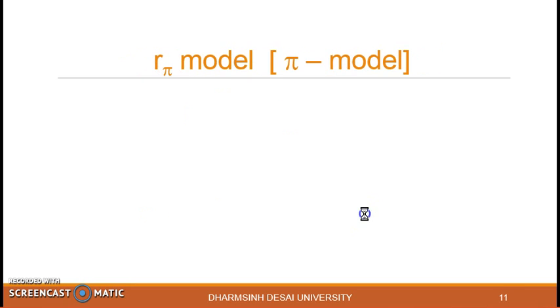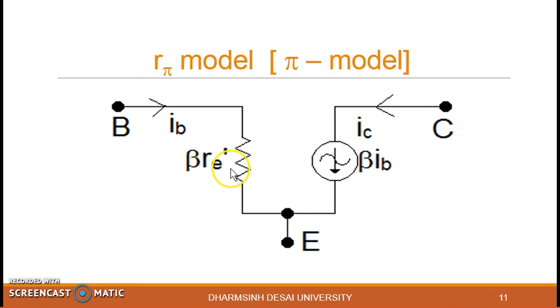So your pi model will look like between base and emitter beta RE dash and between this beta IB. So if you see now if you use this model for the CE configuration it becomes very simple because your emitter is common that will be grounded. So it will be like one loop input loop on this side and output loop in this side and it becomes very simple for the analysis.